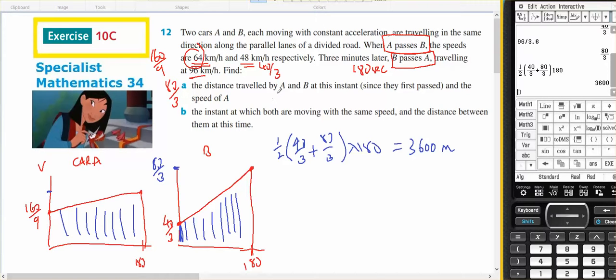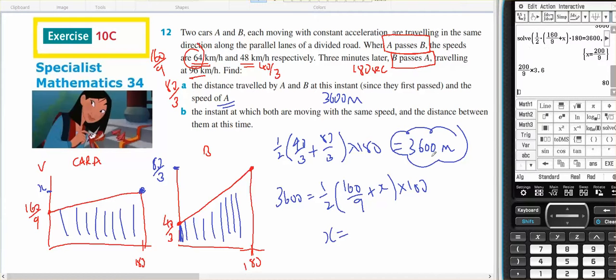The distance traveled by A and B at this instance, so that's the distance, and the speed of A. Okay, so if I call the speed of A, X, then I know that 3600 should equal a half, 160 on 9, plus X, times 180, therefore X equals... So done on the class pad, I get 200 on 9 meters per second, or 80 kilometers per hour.